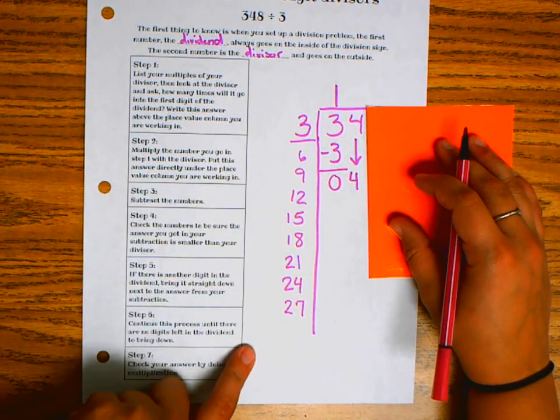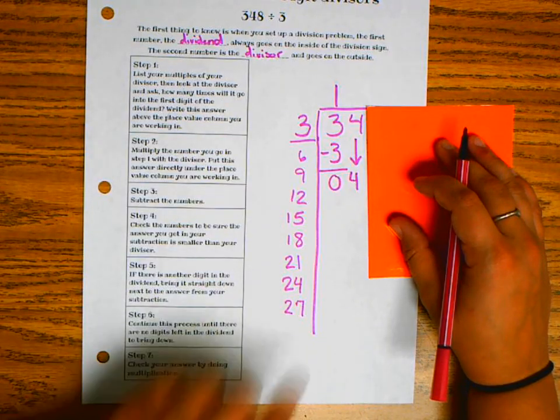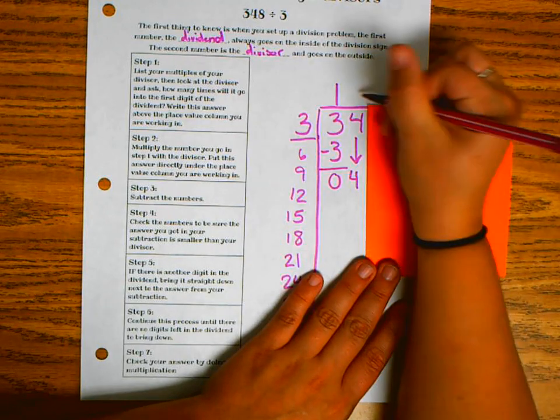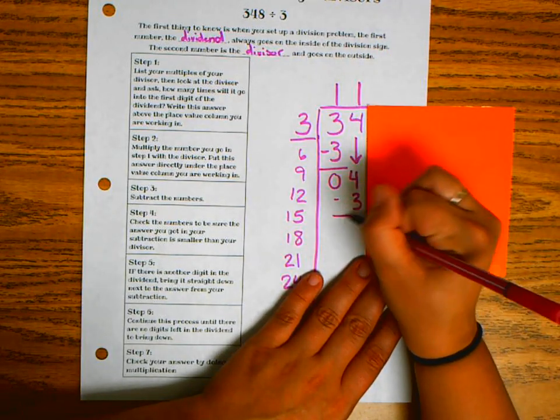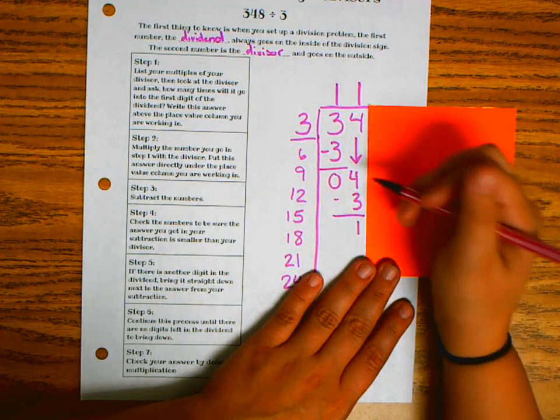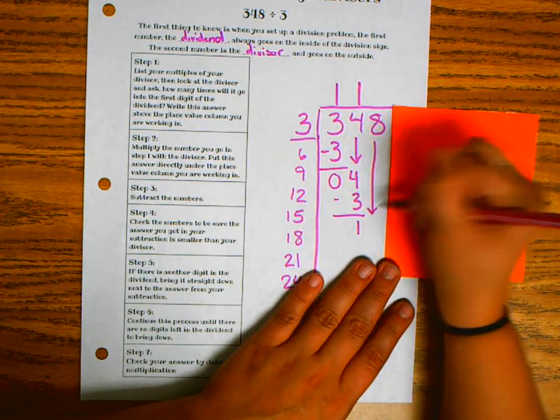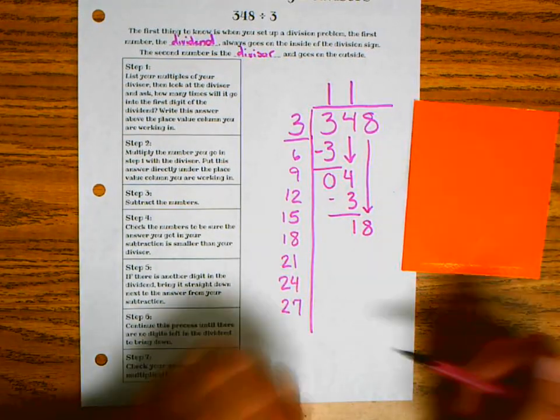So now I look. And how many groups of 3 can I subtract from 4? Well, that's only one group. And 1 times 3 is 3. 4 minus 3 is 1. And then I bring it on down. So now I have my next number, which is 18. And I bring it back.